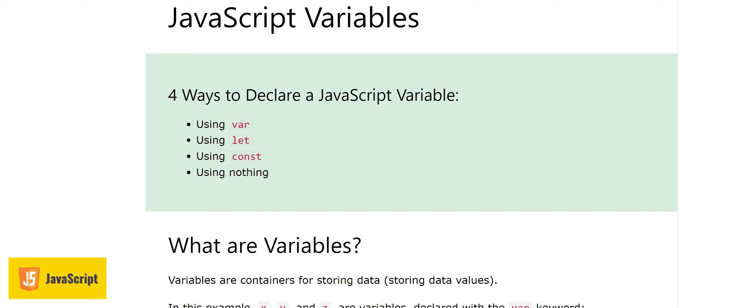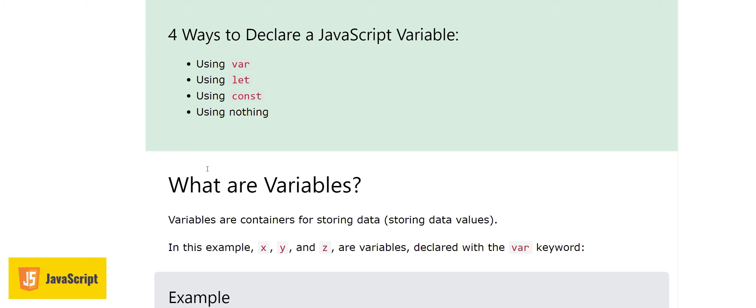Assalamualaikum, my name is Muhammad Sadir and you're watching my YouTube channel. In today's video we will study JavaScript variables. There are four ways to declare them: using the var keyword, using let, using const, or using nothing.